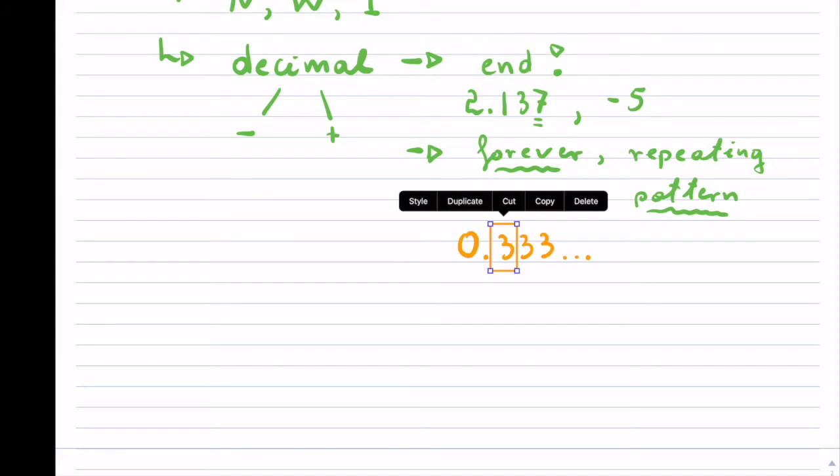Instead of writing these decimals here, we like to simply write this as 0.3, and we will put a bar, and that bar represents the pattern that is being repeated.